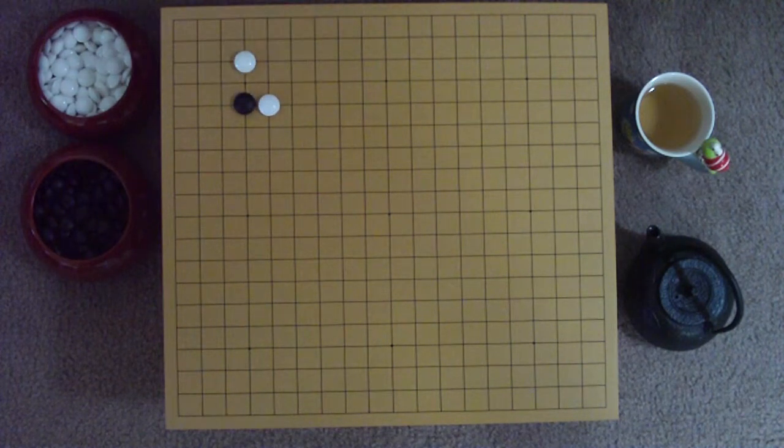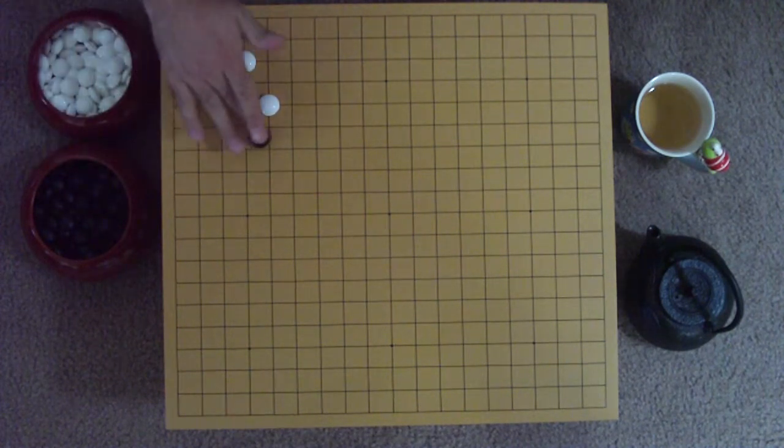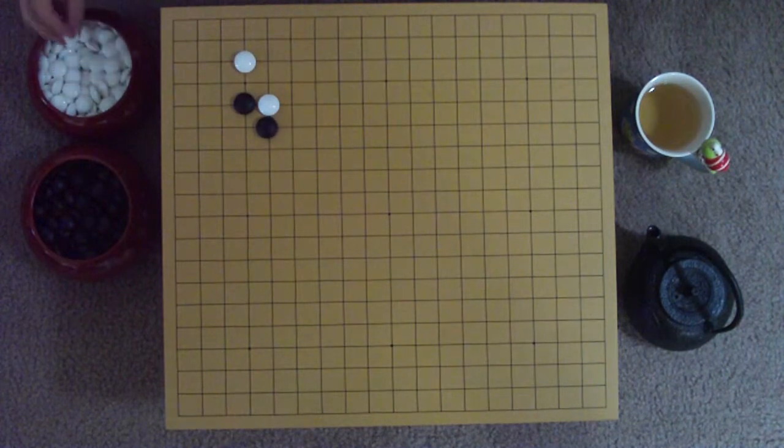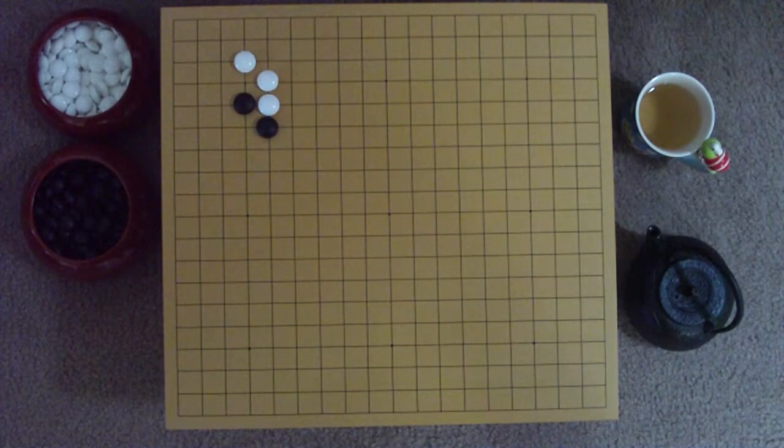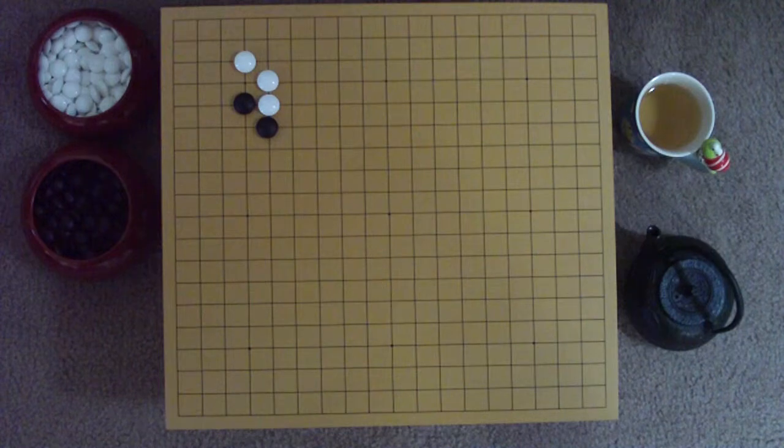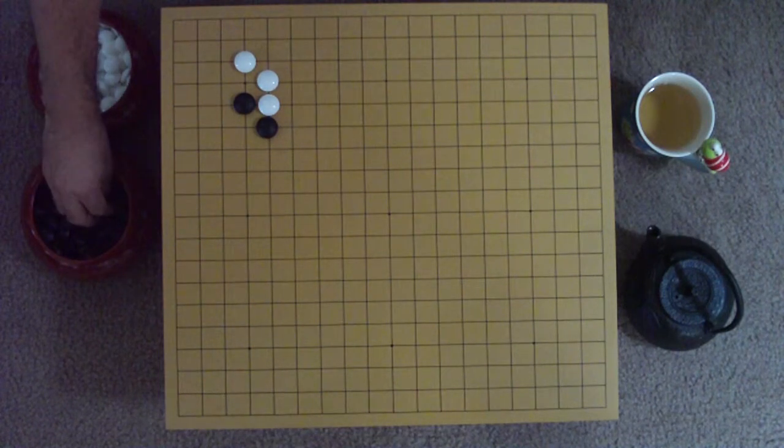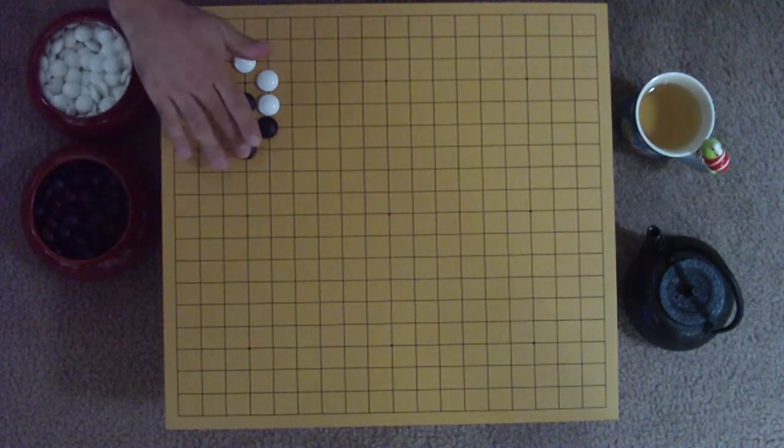If Black bends around with a diagonal, then White can protect her stone by dropping down to create an iron pillar shape. Black may then claim territory along the right side by forming a tiger's mouth shape along the 4th line.